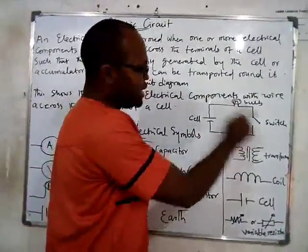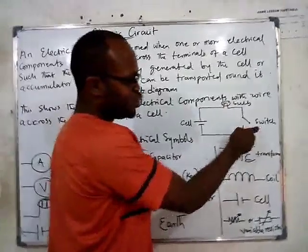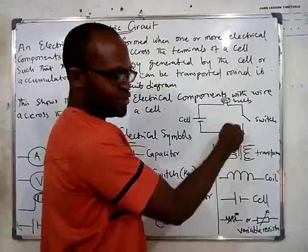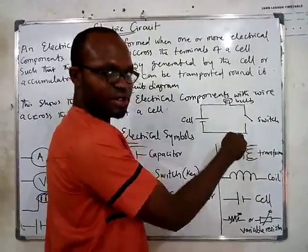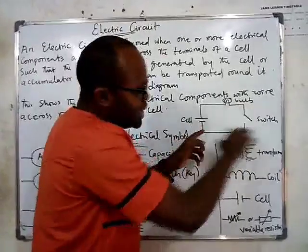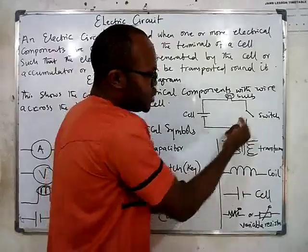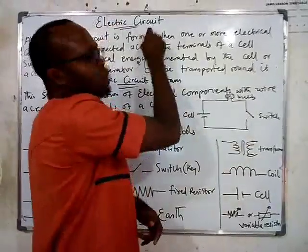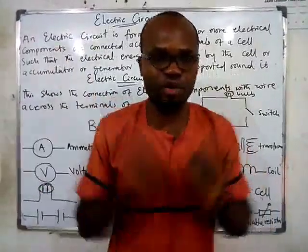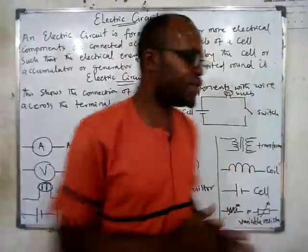What are the electrical components in this circuit? There's a bulb, a switch, and there could be a resistor. This is a cell. So whenever you connect these components using a wire, you call it an electric circuit.